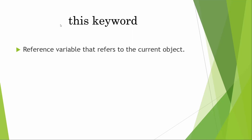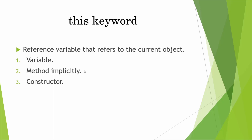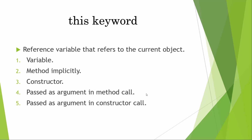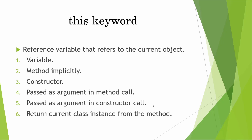Before that, let us see what is the this keyword. The this keyword is a reference variable that refers to the current object. It has six use cases. We can use it with a variable, we can use it with a method, implicitly in a constructor, we can pass it as an argument in a method call, we can pass it as an argument in a constructor call, and we can return the current class instance from the method.